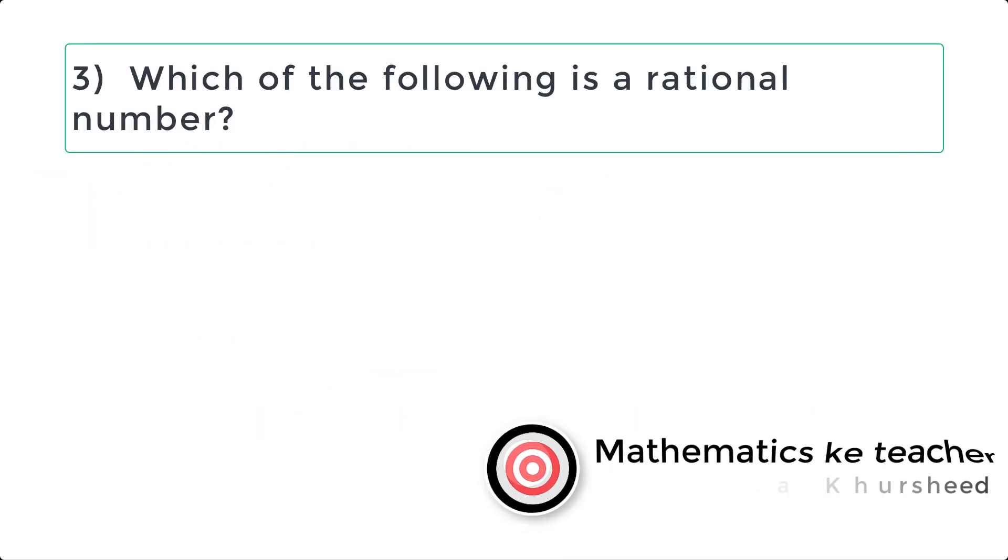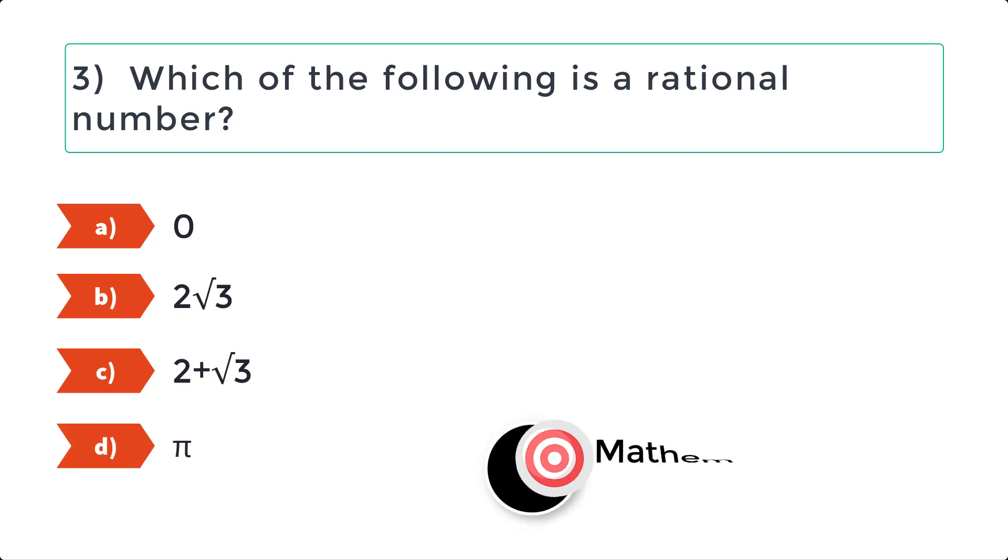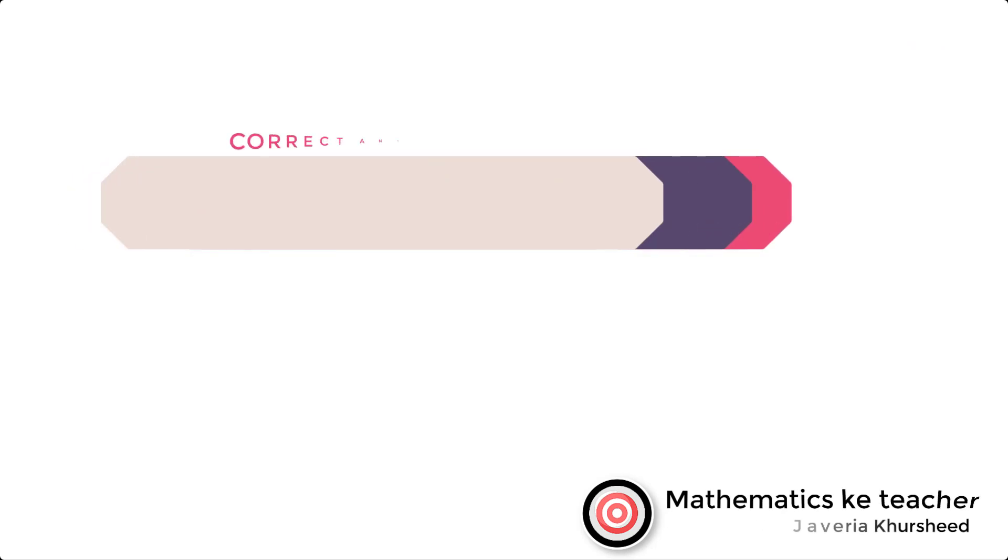Question 3: Which of the following is a rational number? A: 0, B: 2 square root 3, C: 2 plus square root 3, D: pi. Correct answer is A, 0.